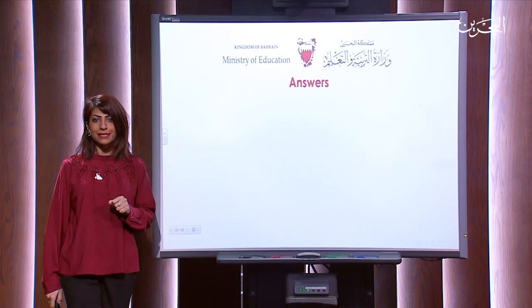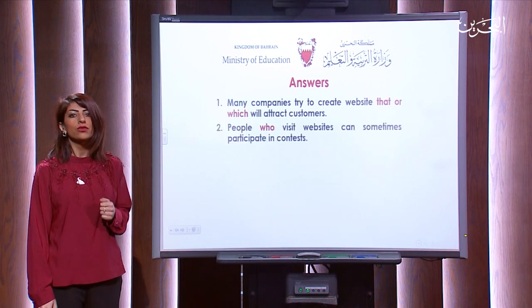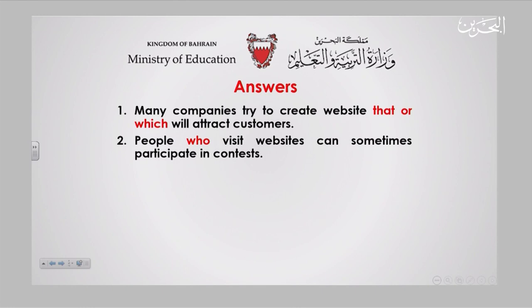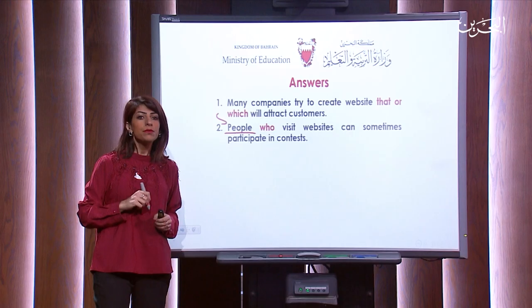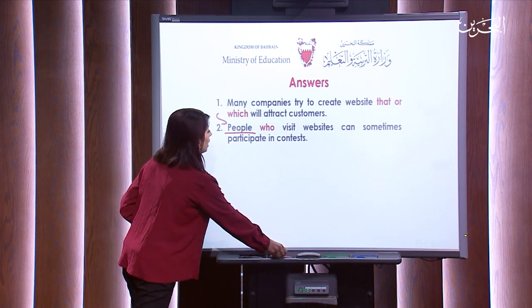Let's see the answers, my dear students. I hope you got them right. Number two: 'People who visit websites can sometimes participate in contests.' Why 'who' and not 'whom'? Because 'people' is the subject — they are doing the action of visiting. If it were an object, I'd use 'whom.' Number three: 'Contestants can win prizes that or which include money or free gifts' — either 'that' or 'which' works because both clarify things.